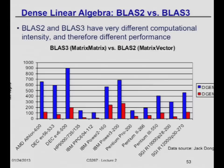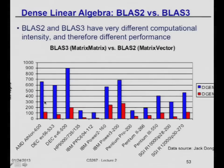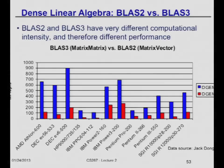Here's another piece of data showing this is true very broadly. Each pair of columns is a different processor. The blue line is the speed of matrix multiply (DGEMM) and the red line is the speed of matrix-vector multiply (DGEMV). No matter what platform you're on, matrix multiply goes a large multiple of the speed of matrix-vector multiply. This benchmark is for large square matrices; if everything fits in cache so there's not much data movement, they'll run at about the same speed. But once it gets big enough that it doesn't fit in cache, you see these big differences.